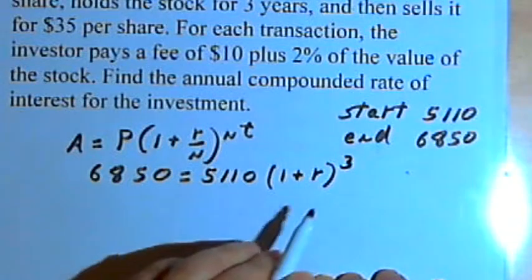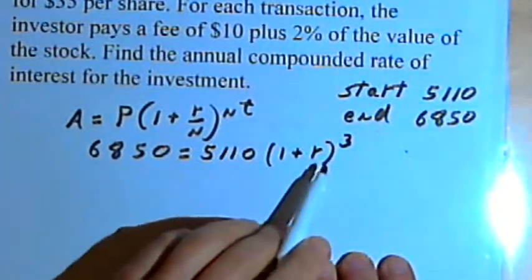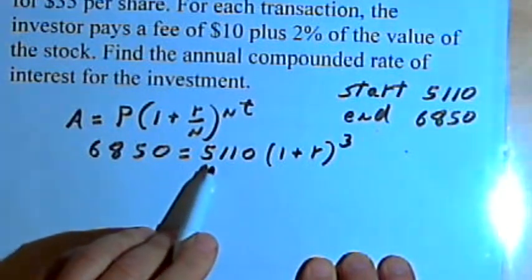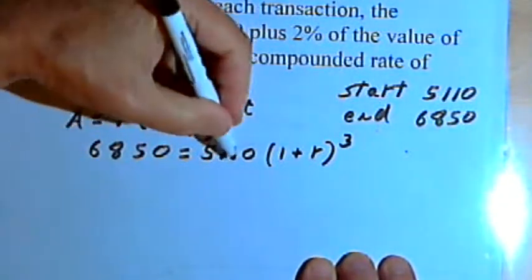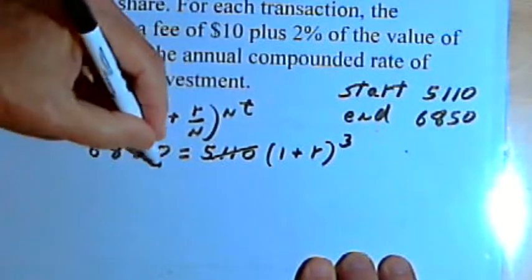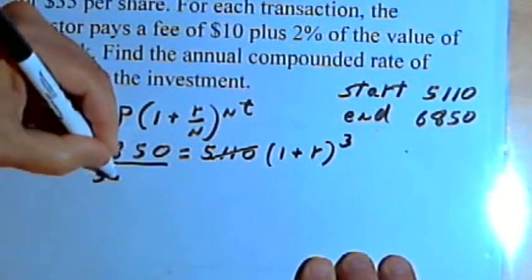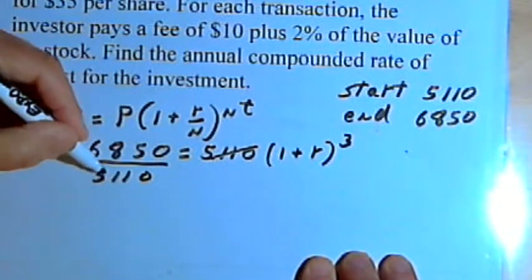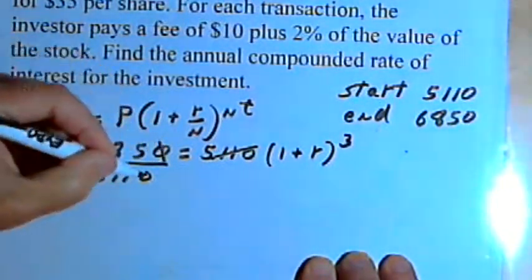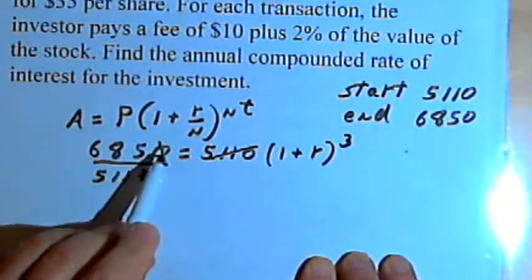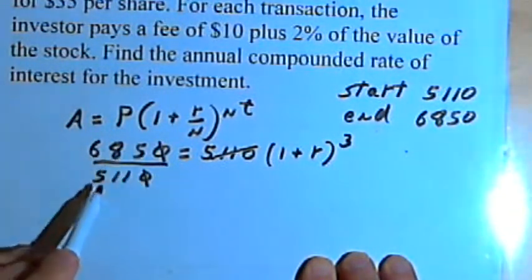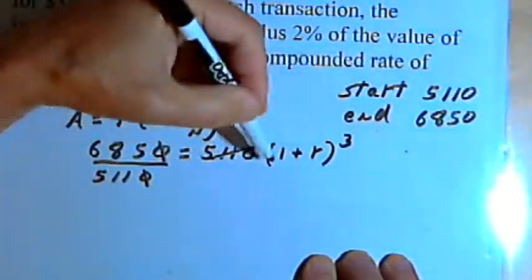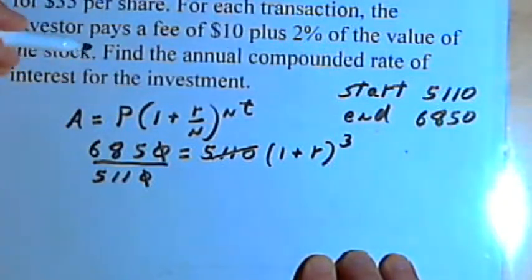Now we just want to solve this and find out what r is. So the first thing I'm going to do is divide both sides by this 5,110. So now I've got 6,850 divided by 5,110. I'm going to simplify that by dividing both these numbers by 10: 685 divided by 511. And that equals (1 plus r) raised to the third power.